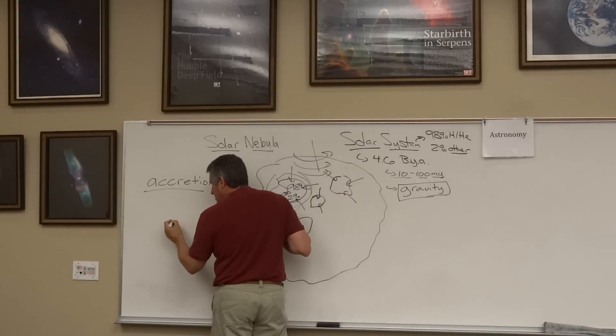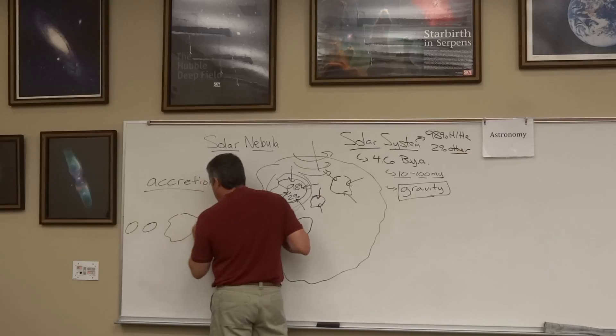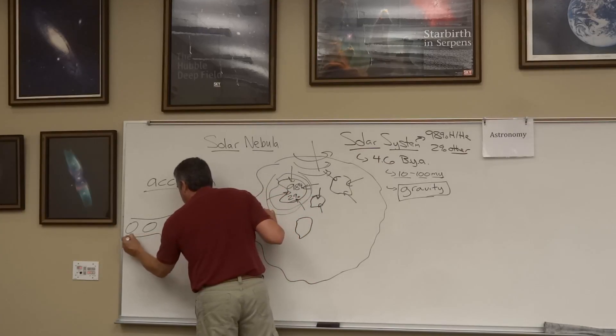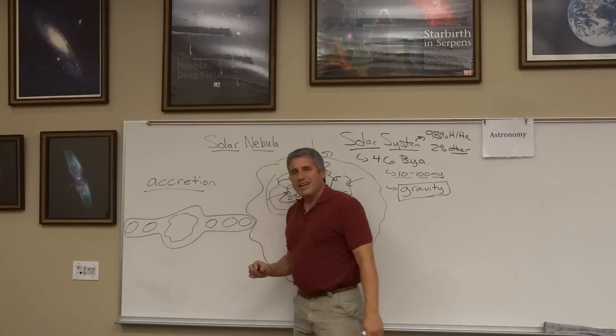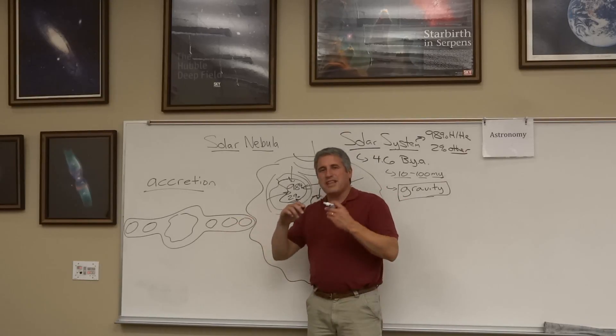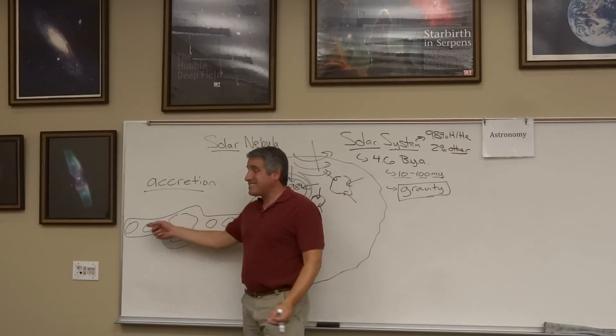So our early solar system, our early solar nebula, has clumps surrounding other clumps. They have been accreted into some sort of disc as the result of the figure skater effect and the pizza dough effect. We find ourselves in a flattened disc of material. That's exactly why all the planets sit in the same plane.